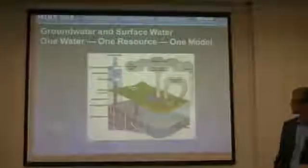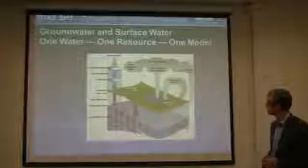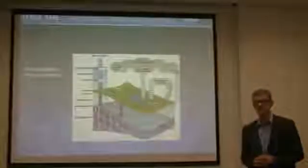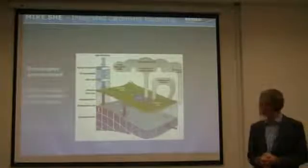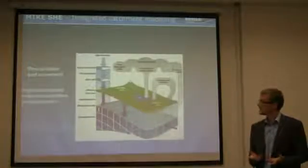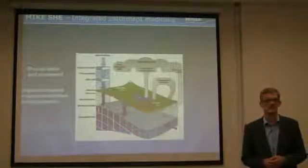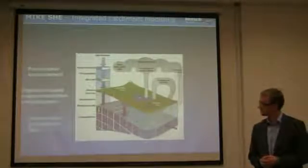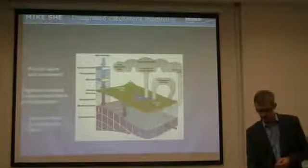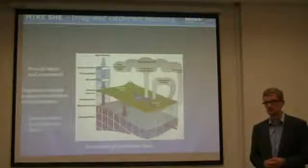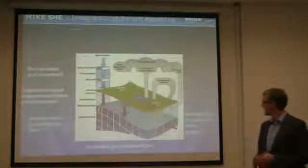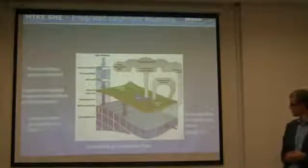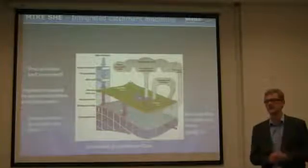The MIKE SHE model contains a large number of processes. Just to take the tour around: precipitation, snow melt is one of the important sources of water in this framework. It contains evapotranspiration, infiltration as a function of the vegetation that we have locally. It has a component for overland water flow, as well as saturated groundwater flow.